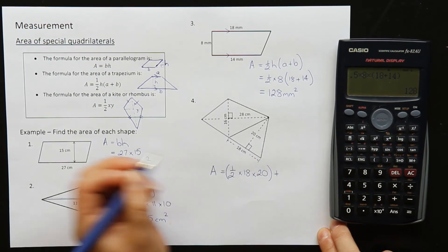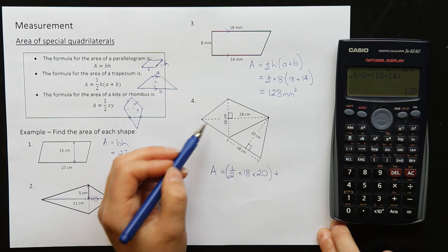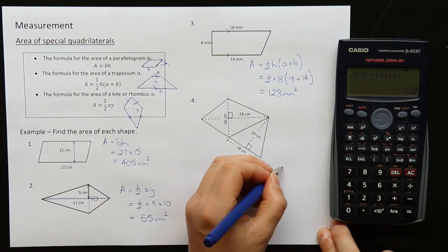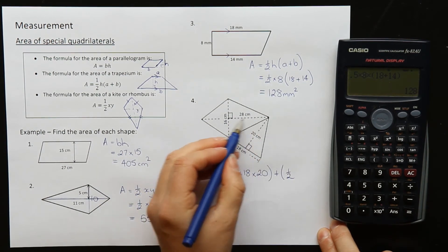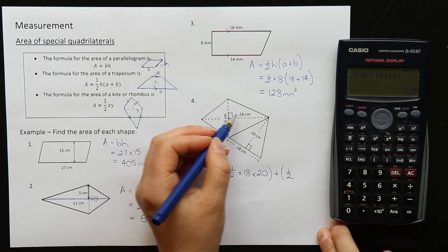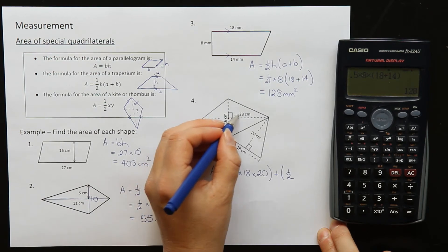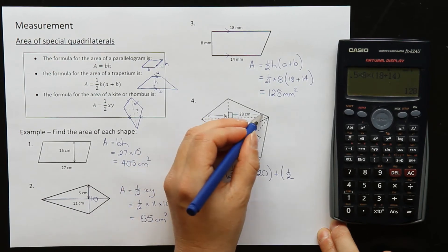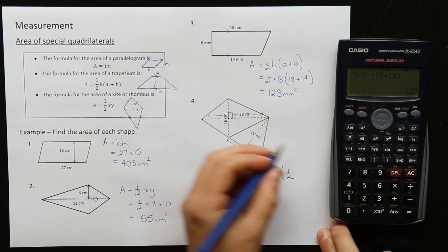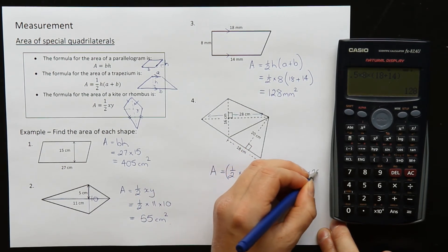Okay, there's my triangle done. Now I want to add on the kite. The kite formula is half XY. So half, X and Y are the two diagonals, 16 times 28. Now it's a bit hard to see, a bit hard to mark on there. That 28 goes the whole way through. Okay, so it is half times 16 times 28.